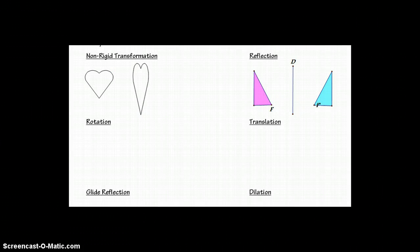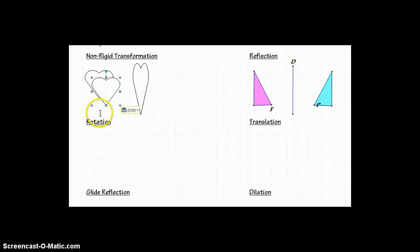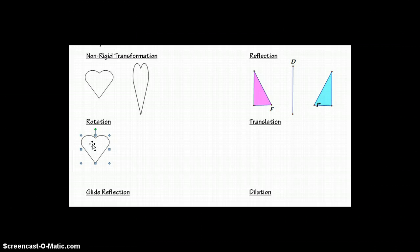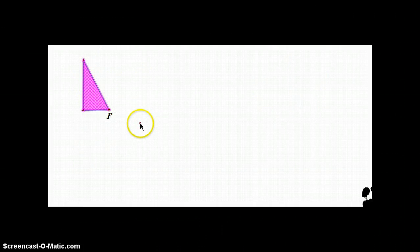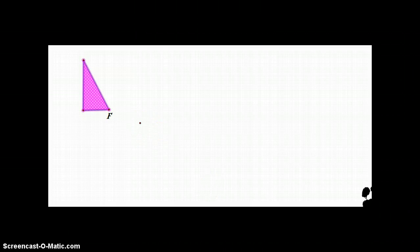Now we're going to talk about rotation, which is turning an object a certain amount of degrees. If we take our heart and make another one, we can rotate it by turning it a certain amount of degrees. We're going to take this triangle and rotate it about this point. We're going to do a few different rotations.